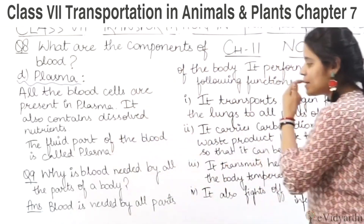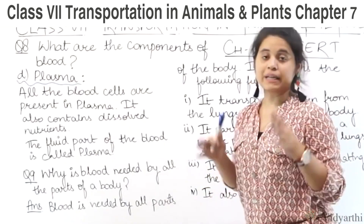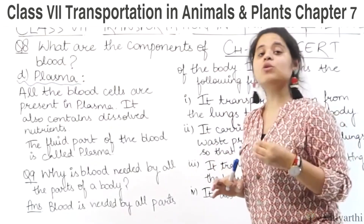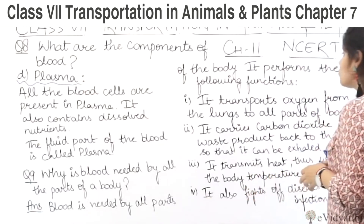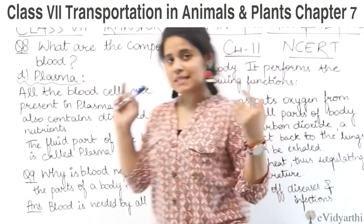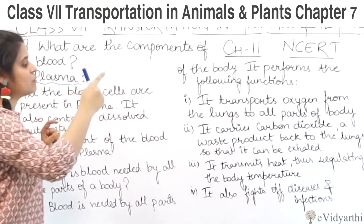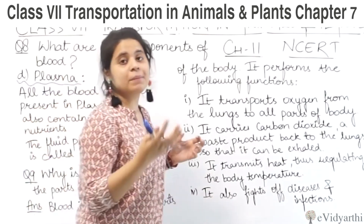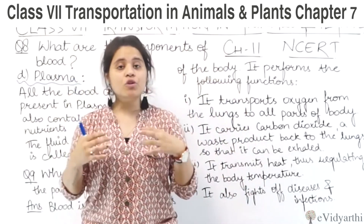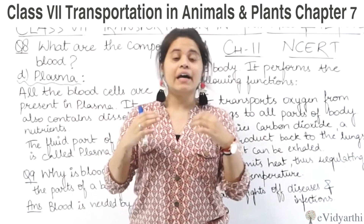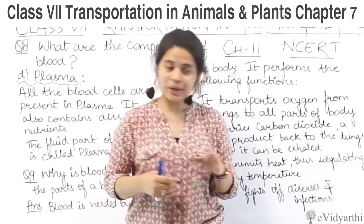Ab aate hain hamare next question pe. Question number 9 says: why is blood needed by all the parts of the body? Ab hamaare body ke har part mein blood hota hai, toh uski kya need hai? Blood is needed by all the parts of the body — it performs the following functions. First, it transports oxygen from the lungs to all parts of the body. Jab bhi hum respiration karte hain, inhale apne nostril se karte hain — ab jo oxygen hamare body mein ja raha hai, wo saare parts tak blood ki help se pahunchta hai.